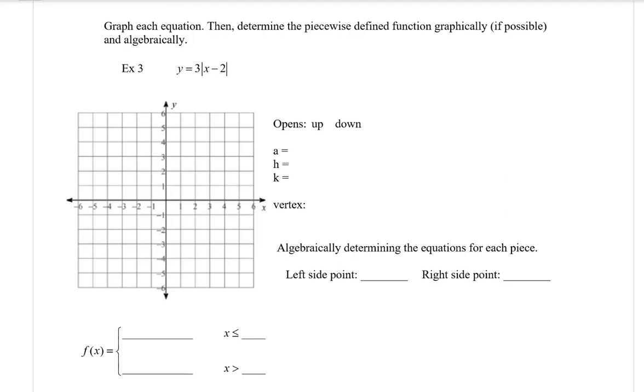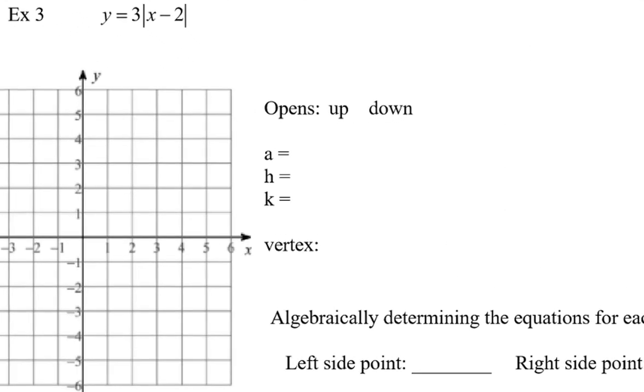So here we are. We're taking a look at the absolute value equation y equals 3 times the absolute value of x minus 2. So I know my a value is positive, so that's going to open up, and my a value is three. My h and k values, so my h value, remember, don't forget, flip the sign, so the opposite of negative two is positive two. But there is no k. There's nothing over here, which means our k value is zero.